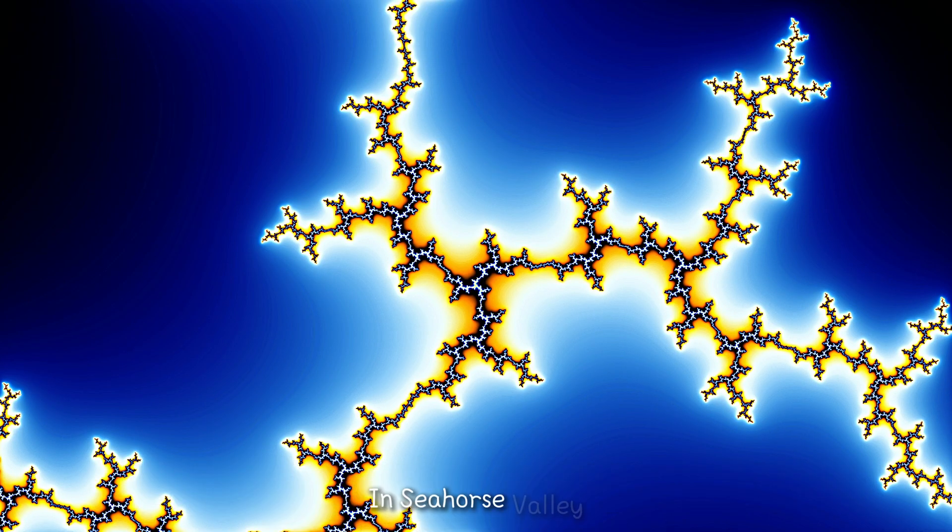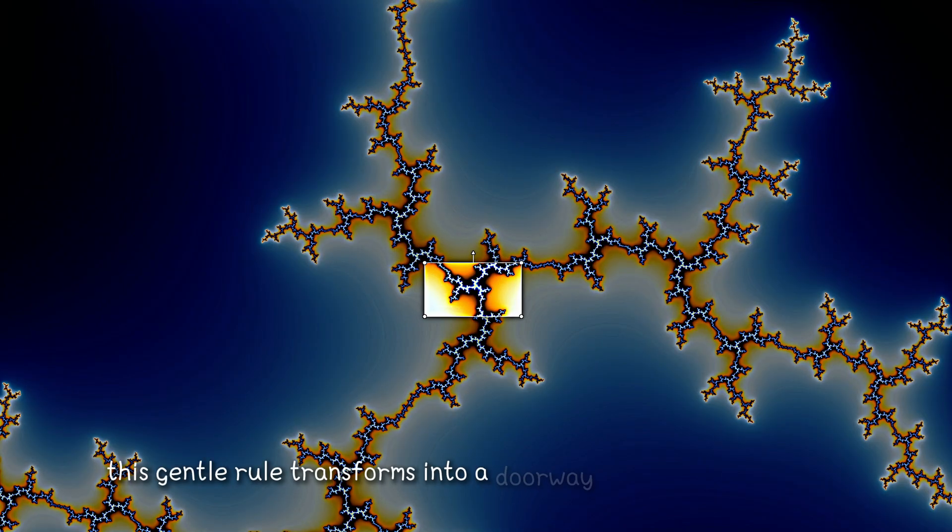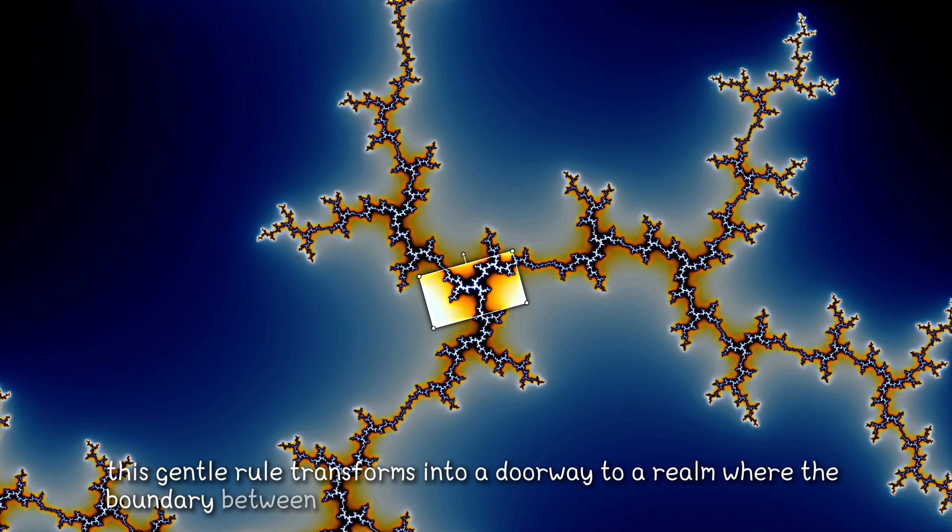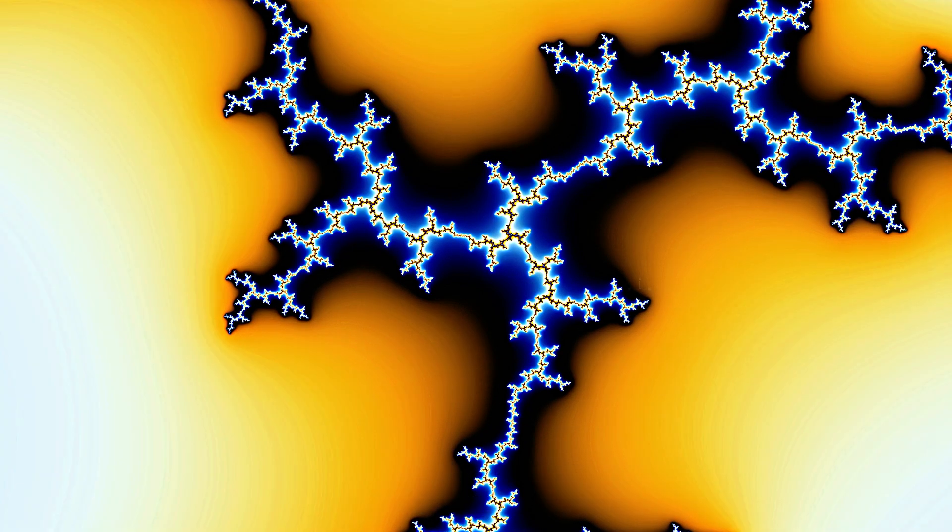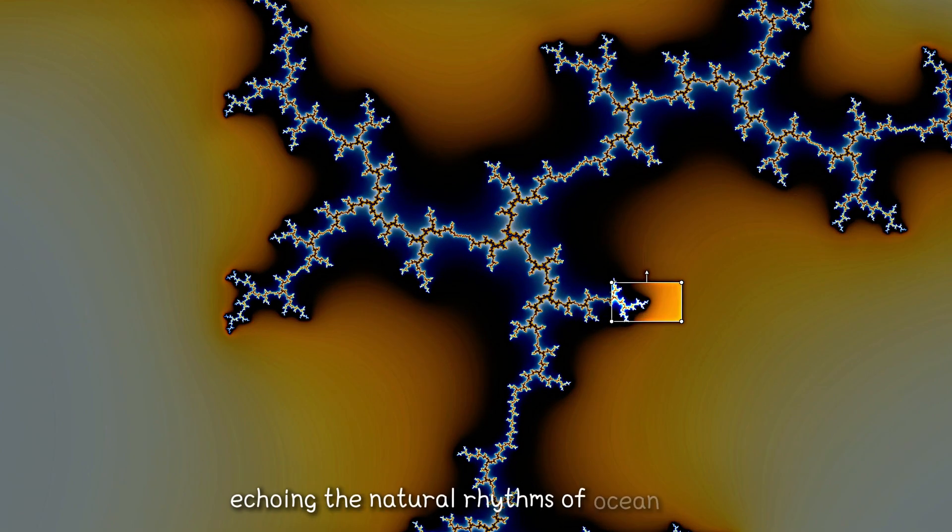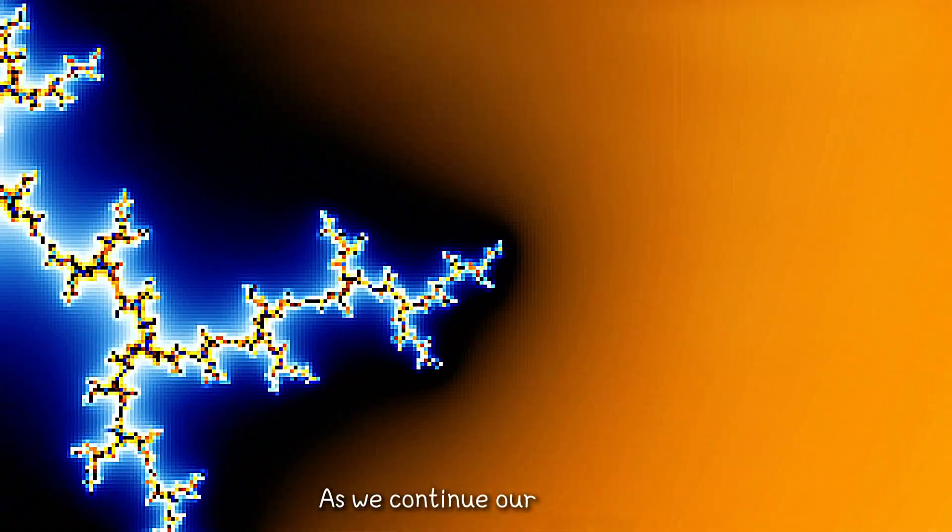In Seahorse Valley, this gentle rule transforms into a doorway to a realm where the boundary between order and chaos is not a fixed line but a fluid dance, echoing the natural rhythms of ocean tides.